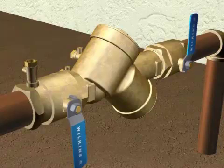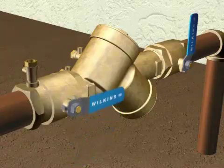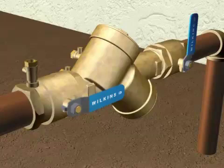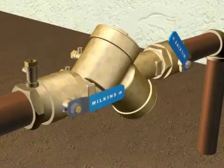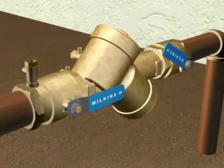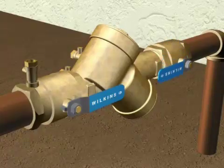Open the number one ball valve slowly to pressurize the valve. Inspect for any leaks. Open the number two ball valve a small amount and wait for the system to pressurize. Fully open ball valve once the system is pressurized.